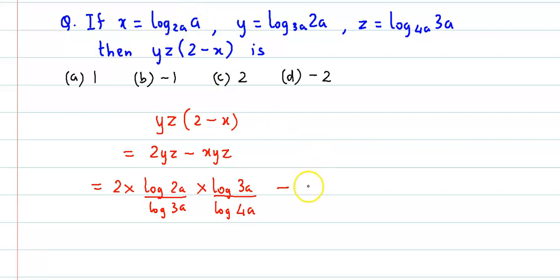Minus x into y into z. Now we'll use change of base theorem on x also. This becomes log a upon log 2a into y will be log of 2a upon log of 3a.